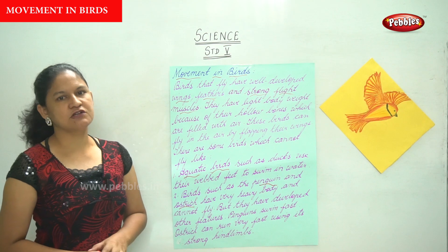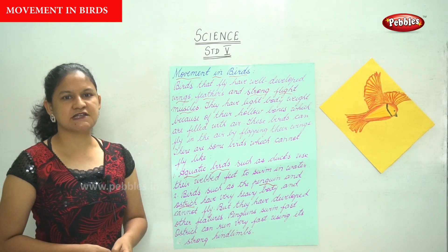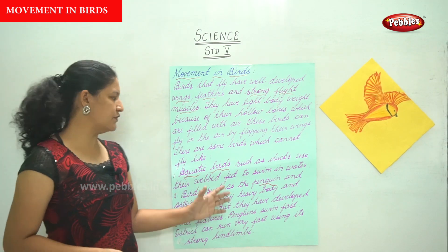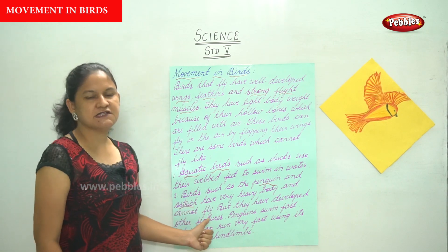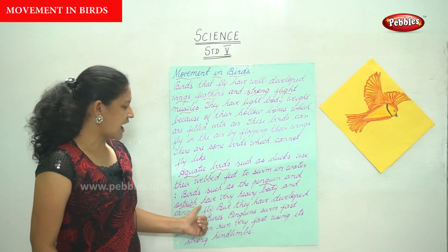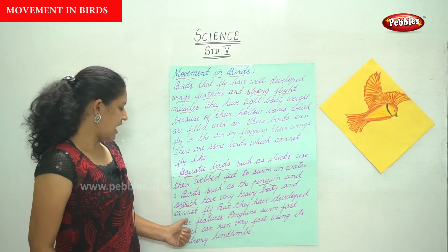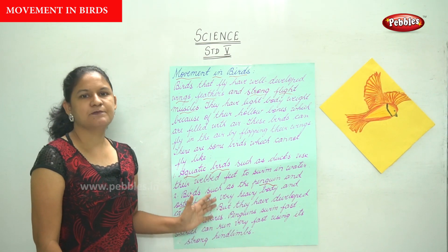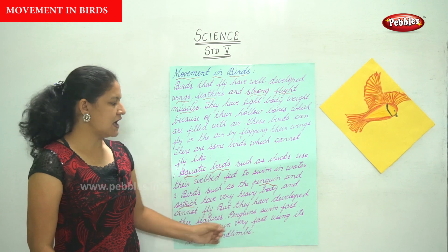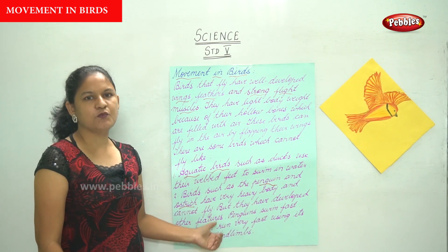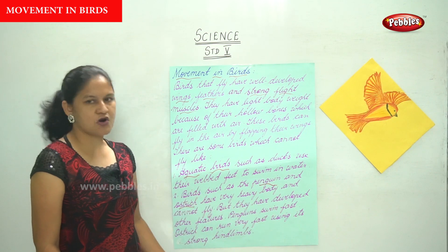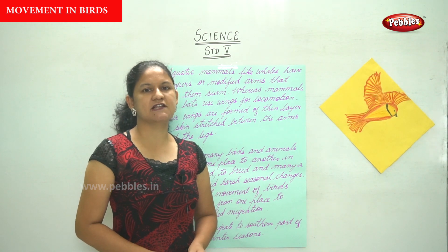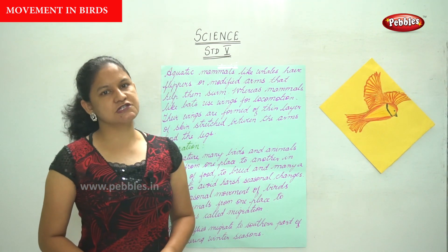There are some birds which cannot fly. Aquatic birds such as ducks have webbed feet that allow them to swim in water. Birds such as the penguin and ostrich have very heavy body weight and hence cannot fly, but they have developed other features — penguins can swim very fast and ostriches can run very fast using their strong hind limbs.